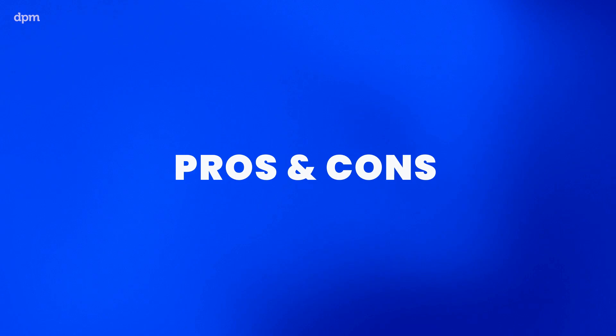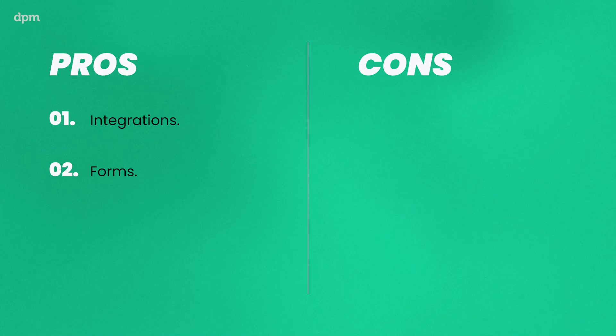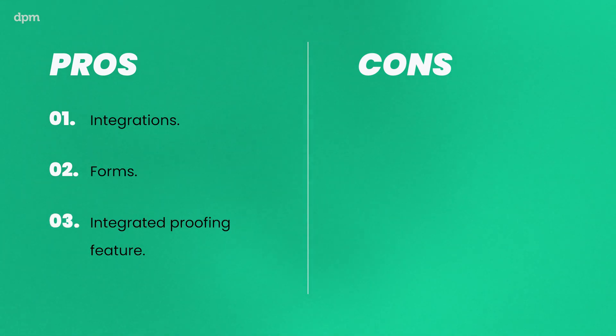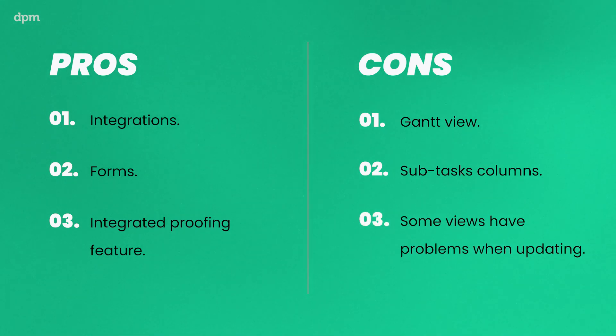Before I go into my final thoughts, let me tell you about the pros and cons I identified while researching and testing this tool. On the pro side: it is very easy to connect to other tools and they have a massive selection of integrations; you can create forms that live within your project as views; and its integrated proofing feature allows you to add comments to any attached file. As for the cons: the Gantt view is not useful to build projects; subtask columns do not replicate task structure, which requires additional customization; and some views, like the calendar and Gantt, seem to have trouble auto-updating.